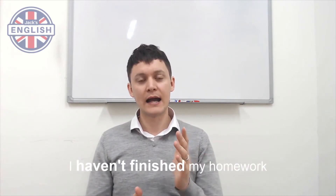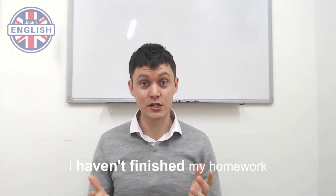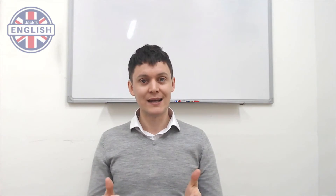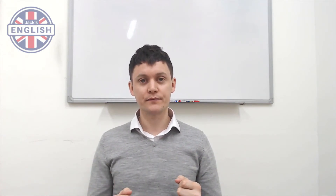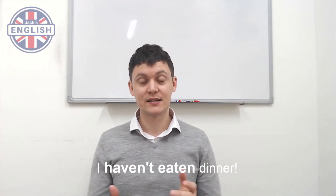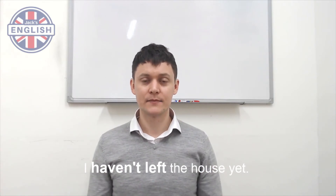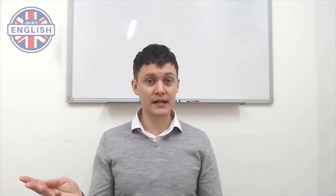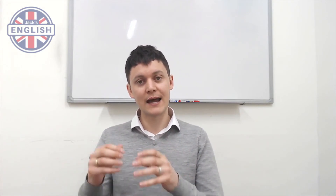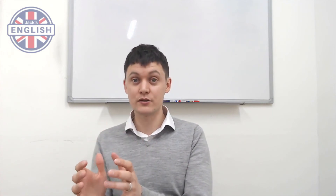Here are four examples. Number one: I haven't finished my homework — an example I don't want to hear as a teacher, but it's possible. Number two: I haven't started the project. Number three: I haven't eaten dinner. And number four: I haven't left the house yet. Try to think about how this grammar is giving that extra meaning — that extra information of 'I intend to' or 'I will.'